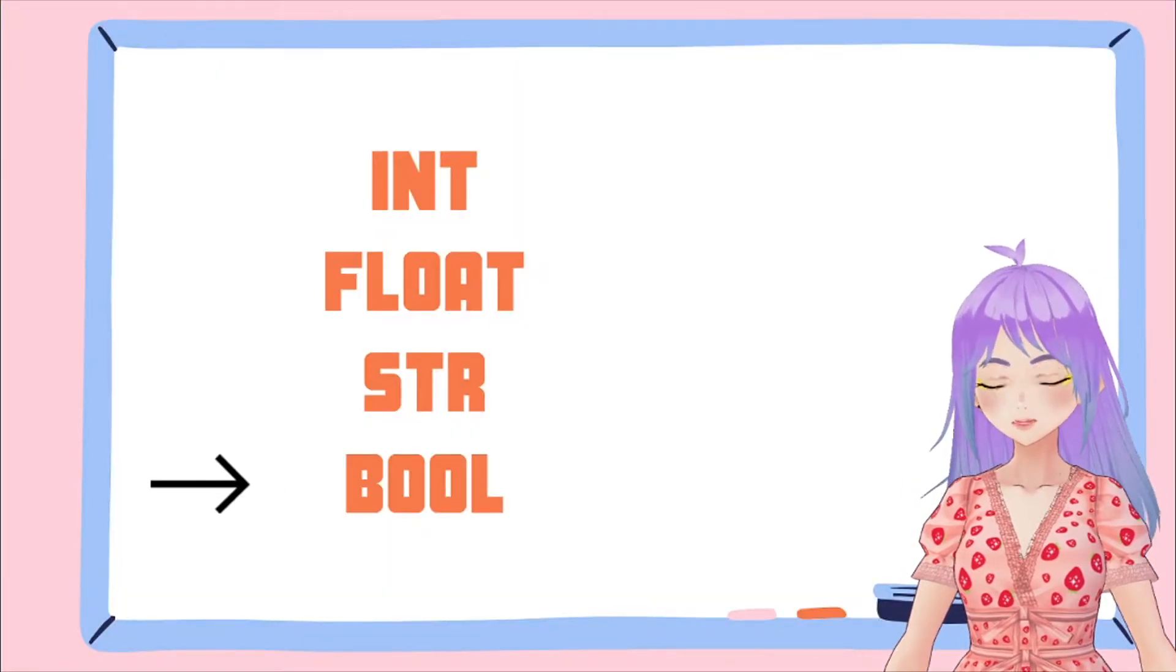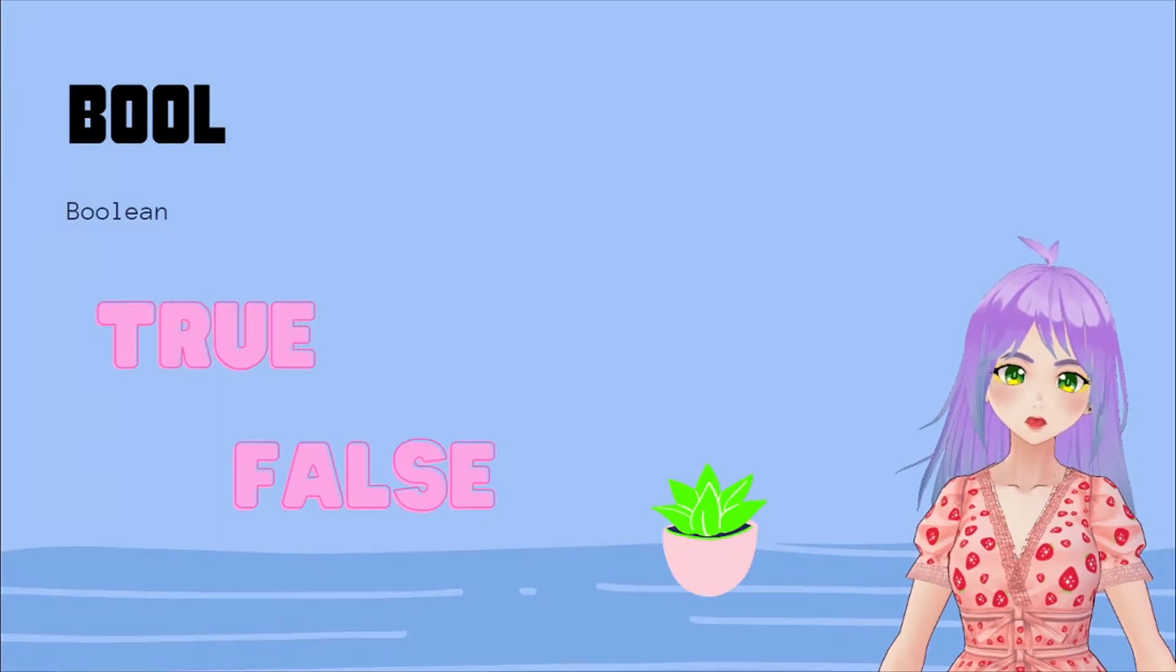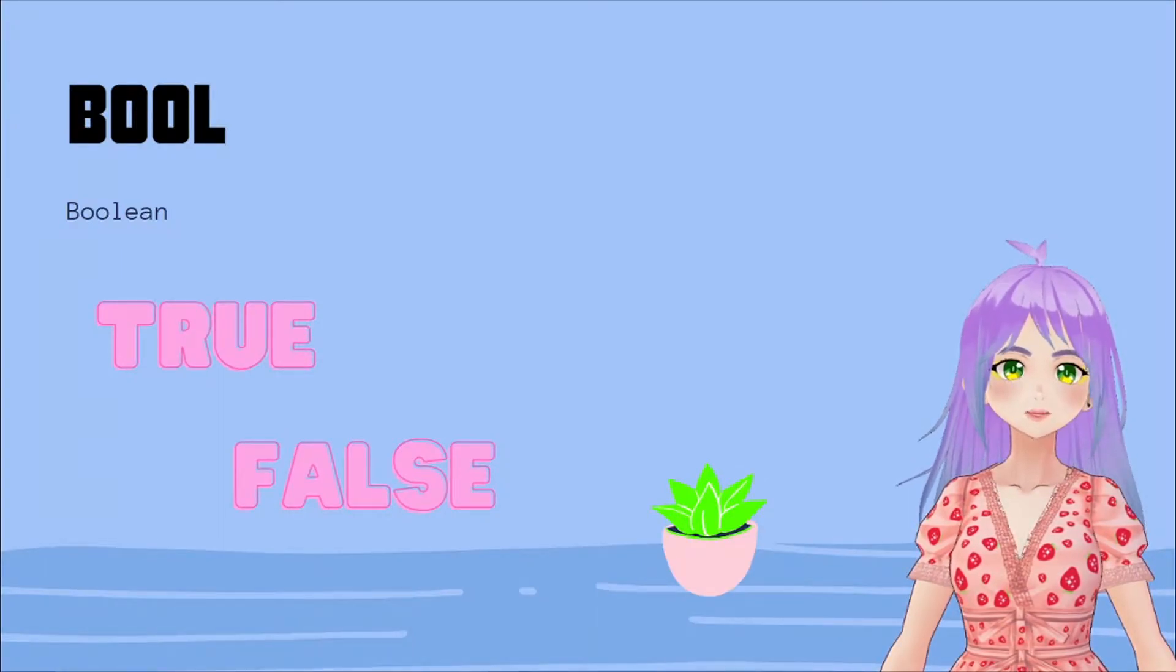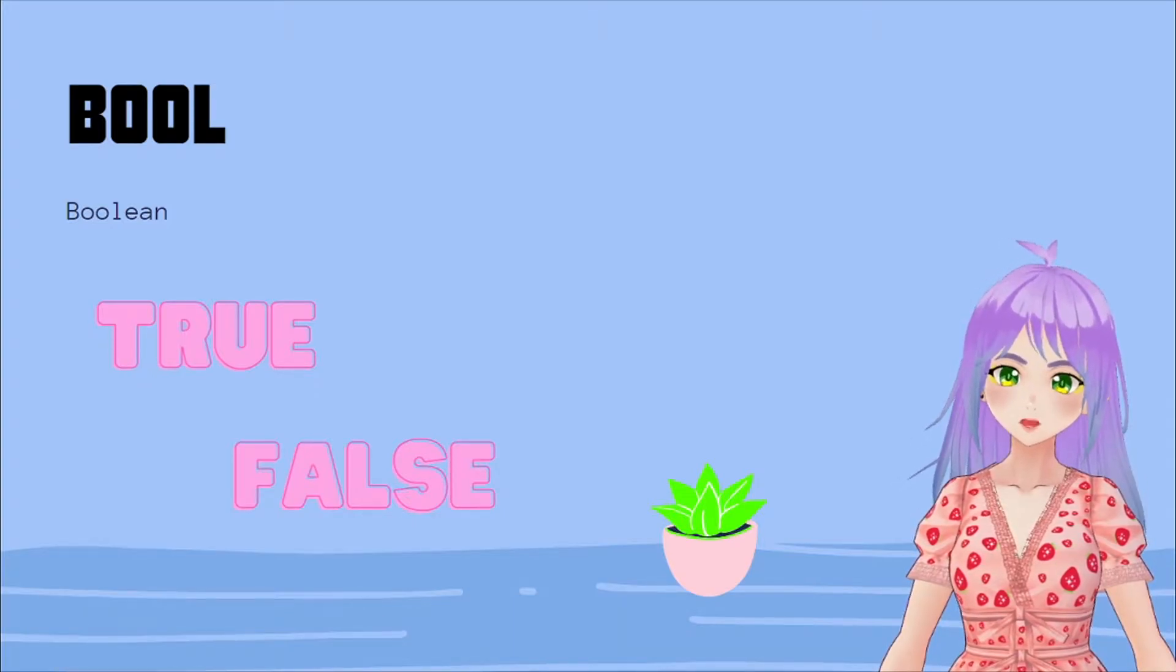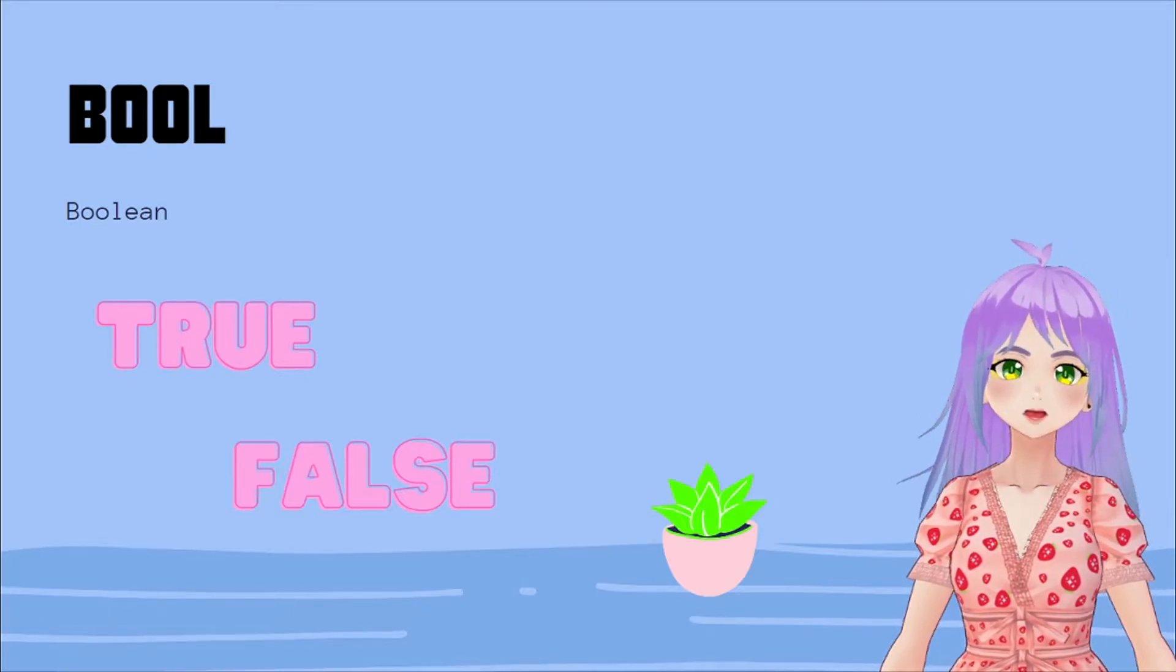The next type of data that we have is bool, that is short for boolean. And boolean data are the ones that can take one value or another value. For example, 0 or 1, true or false.